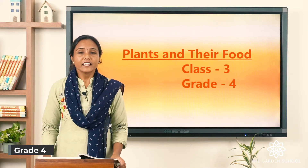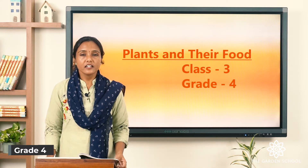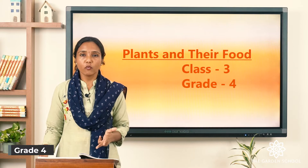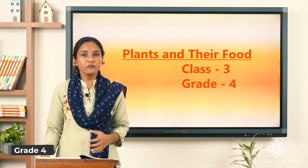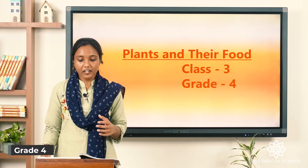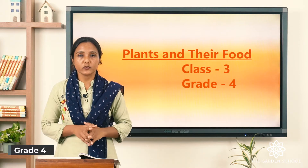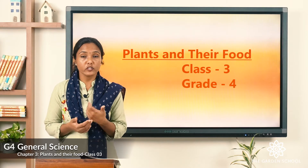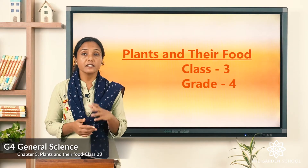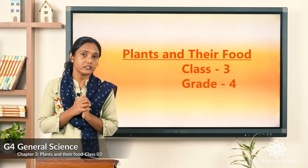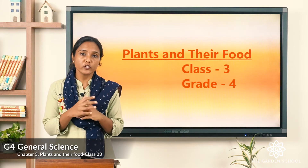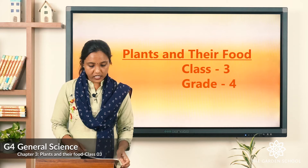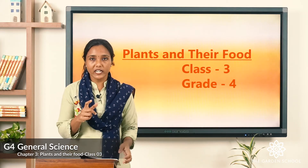Good morning children. In the last class we learnt how plants get sunlight, air and water. Today we are going to learn about two things: plants that do not make food, and plants that feed like animals. Let us start with an activity today — you can all take page number 28.